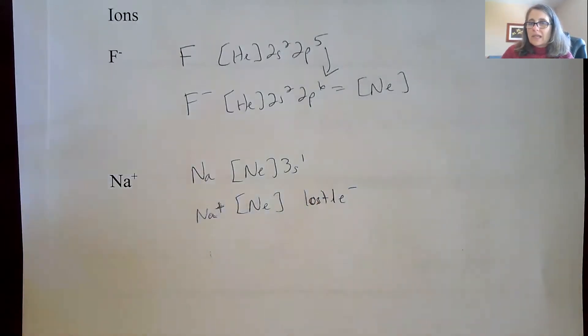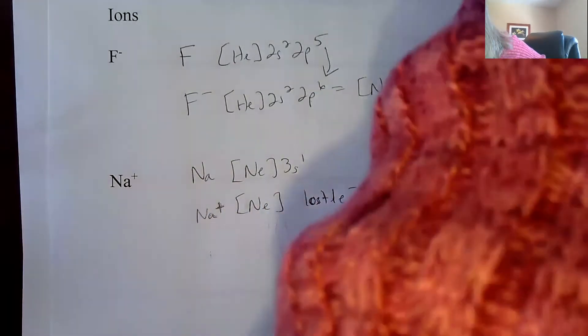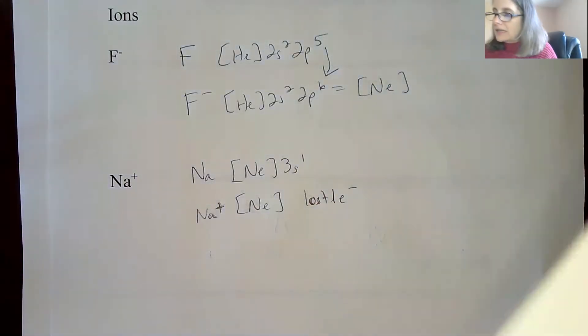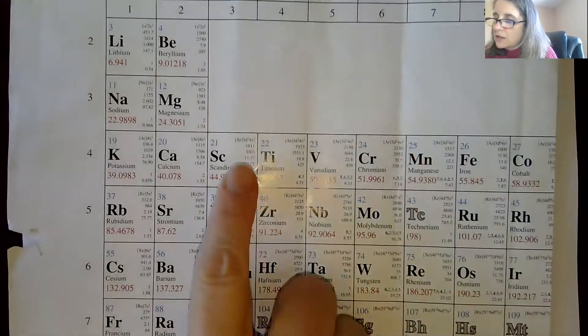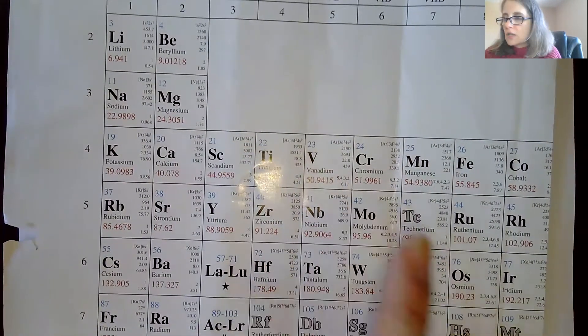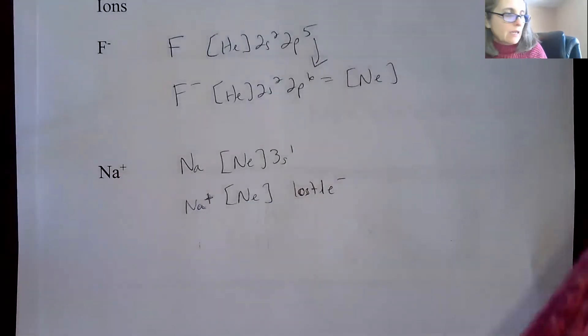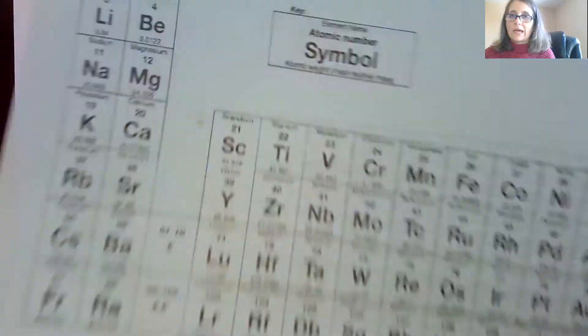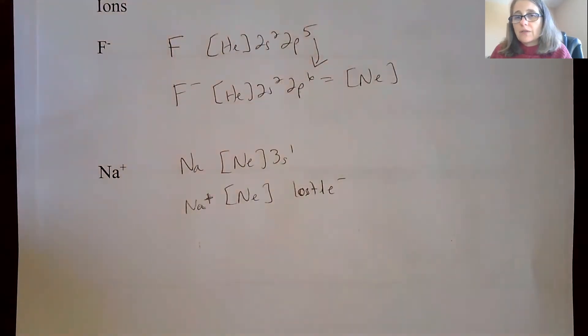So that kind of summarizes how you're going to use the noble gas configuration. And if you look at your Flynn periodic table, your Flynn periodic table has the noble gas configuration in the top right corner. So you could easily pull out a normal periodic table and see if you could write the noble gas configuration and check yourself on the Flynn periodic table.